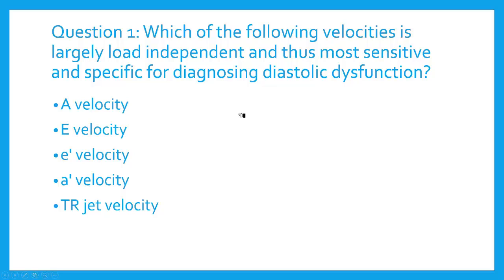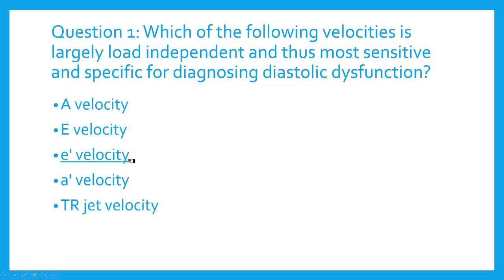Let's end this physiology section with one simple question. Which of the following velocities is largely load independent and thus the most sensitive and specific for diagnosing diastolic dysfunction? Is it your A velocity, your E velocity, E prime velocity, your A prime velocity, or your TR jet velocity? We didn't talk about those last two — A prime is something I've measured but found pretty useless, and I've never known what to actually do with it. So the answer is E prime velocity. E prime is mostly independent of left atrial pressure — it's load independent — so it's really just looking at myocardial relaxation, making it your best marker for diagnosing diastolic dysfunction.